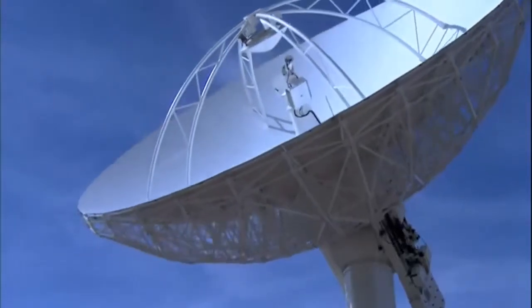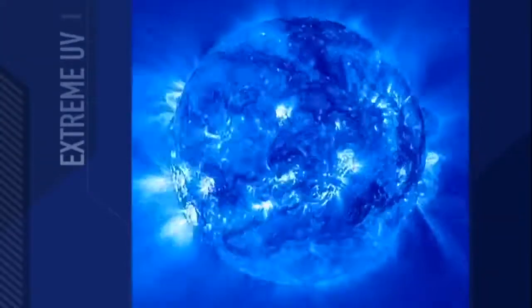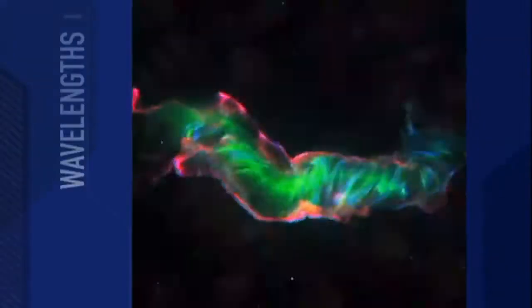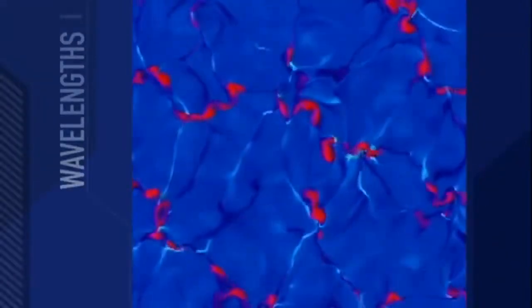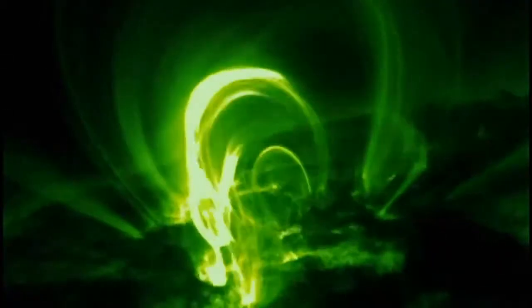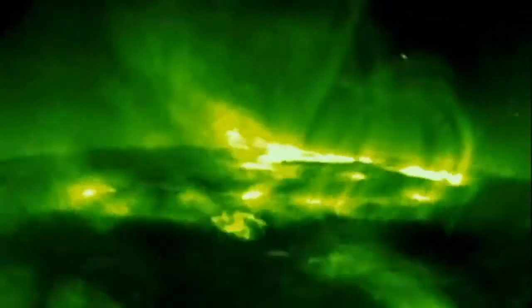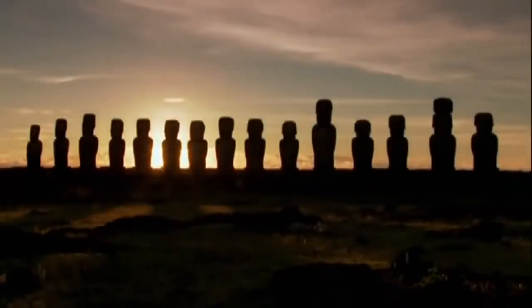Right now, a fleet of about 20 space probes scan and study the Sun in ways we never imagined even 30 years ago. By studying the Sun from the vantage of space, we can see it in a whole new light. Using different light wavelengths, including X-ray and extreme ultraviolet, we can peel back its layers and begin to understand how and why the Sun acts the way it does. Different wavelengths mean different temperatures, and different structures are more visible in different wavelengths.